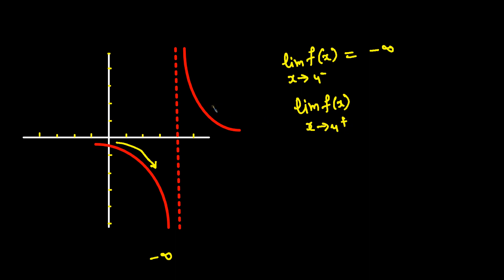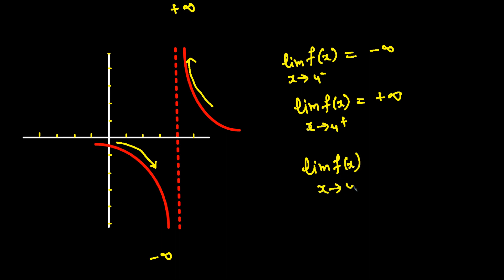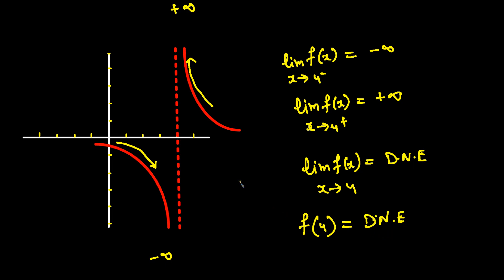Now the limit as x approaches 4 from the right goes towards positive infinity. Since negative infinity does not match positive infinity, the limit as x approaches 4 does not exist. And the value of the function at x=4 also does not exist.